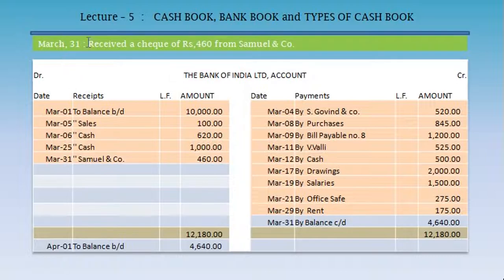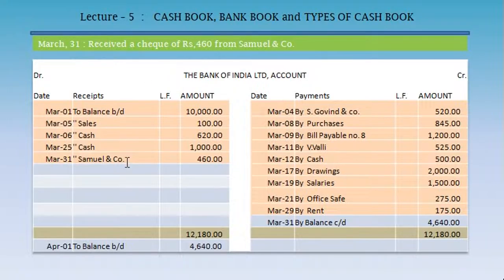March 31: received a cheque for Rs. 460 from Samuel and Company. This is a bank receipt, so we record it in the bank account on the debit side as we have received a cheque: March 31, to Samuel and Company, Rs. 460.